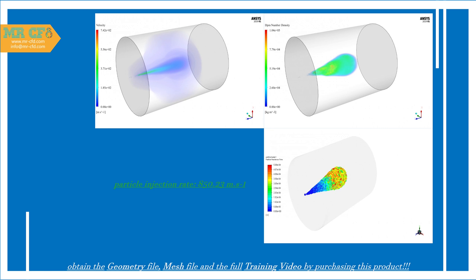After the solution process, two-dimensional and three-dimensional contours related to velocity, DPM density, discrete phase model number and volume, and particle tracking in terms of residence time and diameter size are obtained for better understanding.